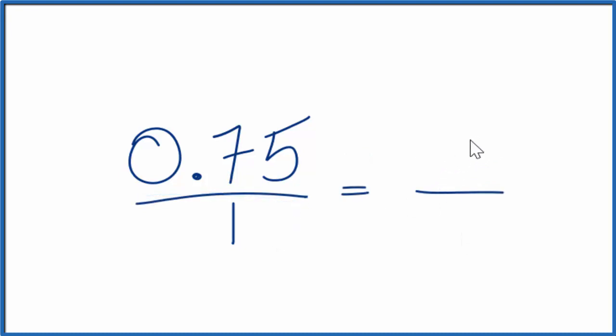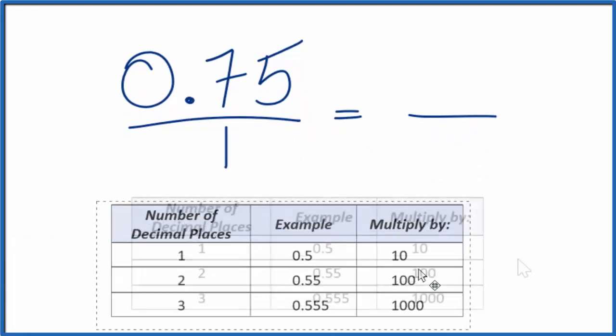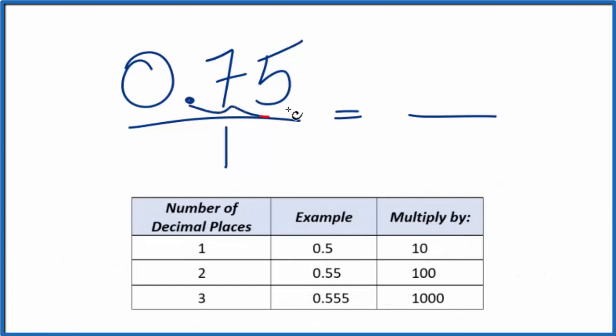So we want a whole number numerator here. This table will help. Since we have two decimal places, like 0.55 or 0.75, we're going to multiply this by 100.